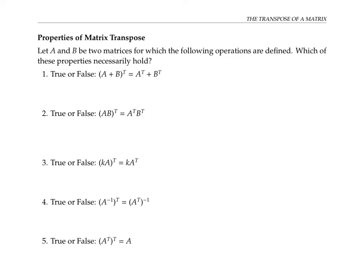Let's work out some properties of matrix transpose. Let A and B be two matrices for which the following operations are defined. For property one, we need addition to be defined, so we need A and B to be the same size. For property two, we need A times B to be defined, so we need the number of columns of A to equal the number of rows of B. For property four, we need A to be a square matrix so that we can take its inverse. Please pause the video and try your hand at figuring out which of these five properties holds.